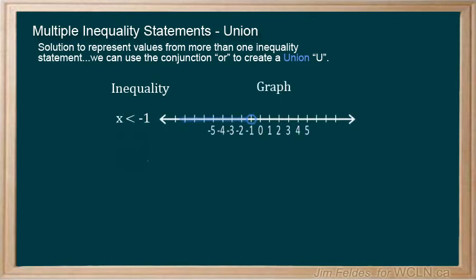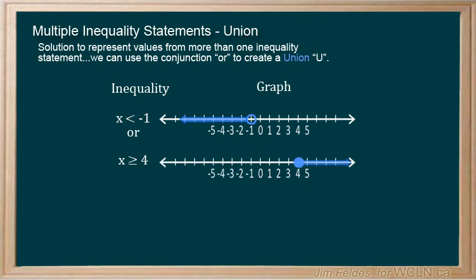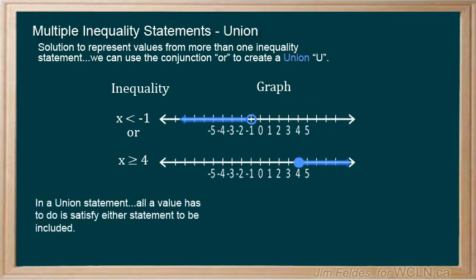x is less than negative 1 or x is greater than or equal to 4. In a union statement, a value only has to meet the constraint of one or the other statement to be included. So any number less than negative 1 or greater than or equal to 4 becomes part of the solution.